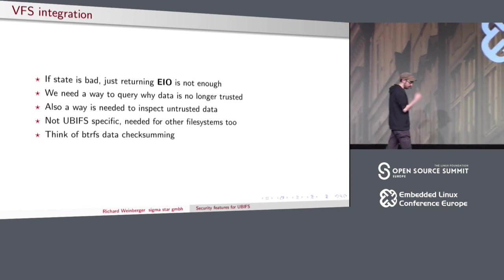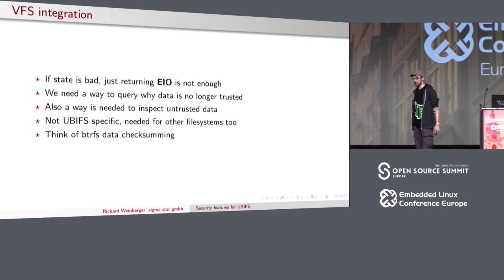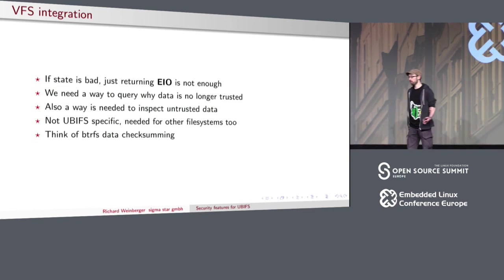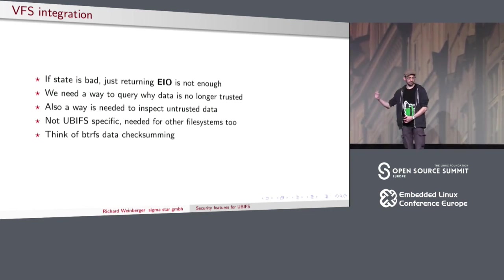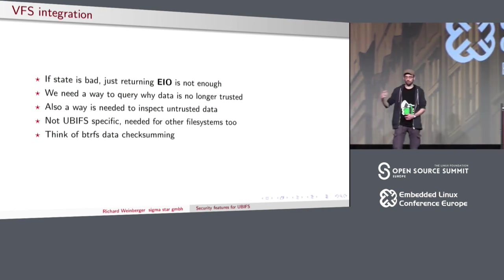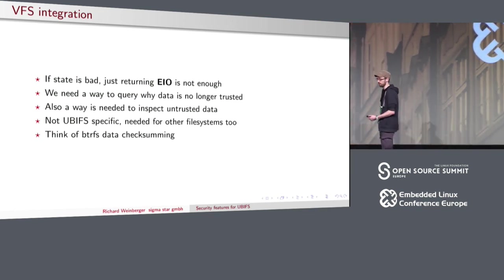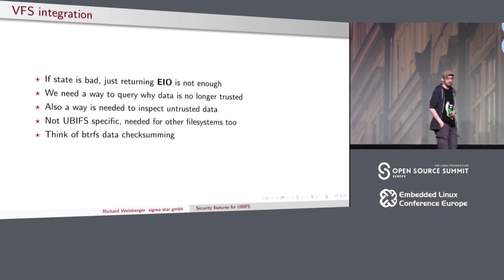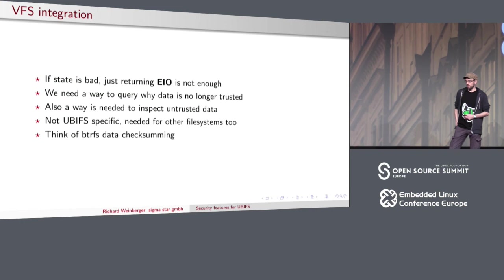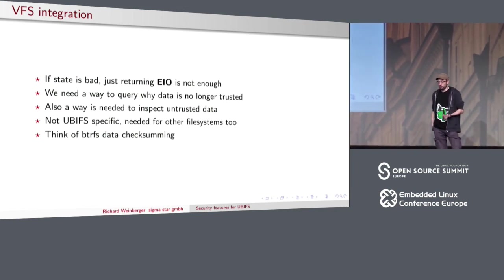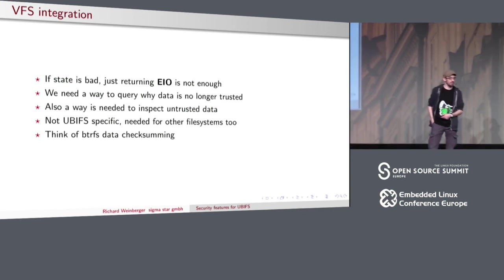One thing often forgotten is the VFS integration. For example, when Btrfs finds a corrupt file it just returns EIO and writes something to dmesg. What I actually want is a user-space interface where I can query the state of a file: is it signed and intact? If not, why — is there a few bit flips, or was it replaced? We need a better interface, and that's something to discuss with the VFS developers. Maybe we can come up with a common ioctl to expose that state. For Btrfs, checksumming already exists and needs to be fixed there too.